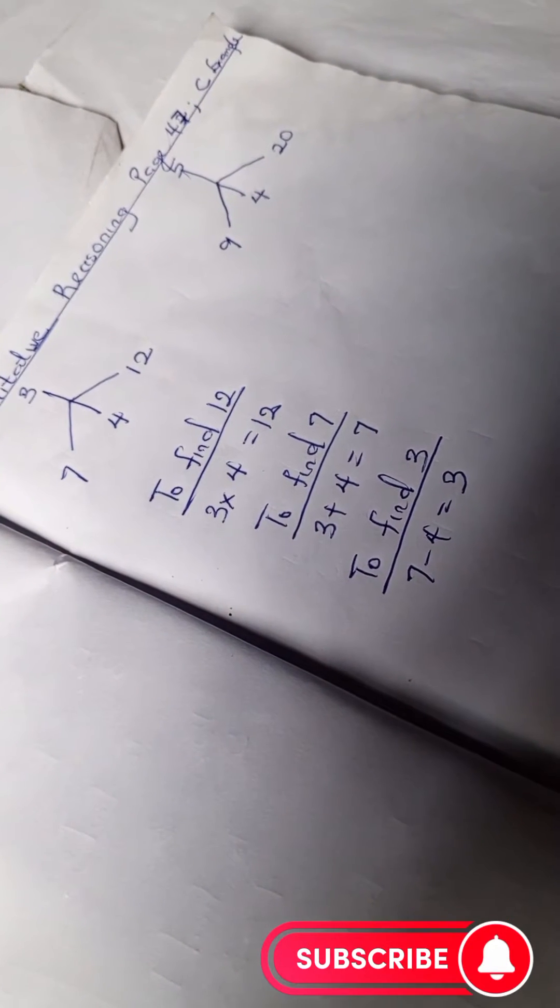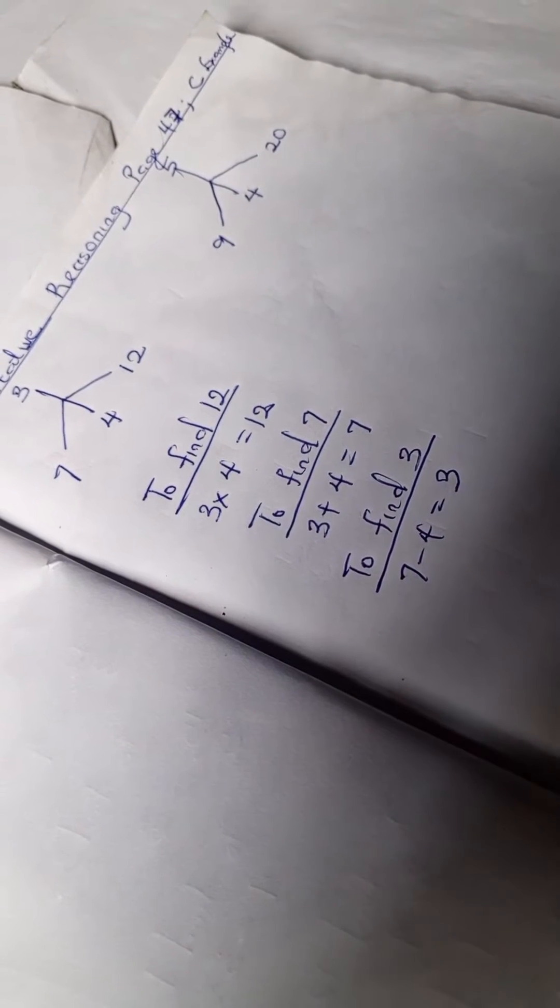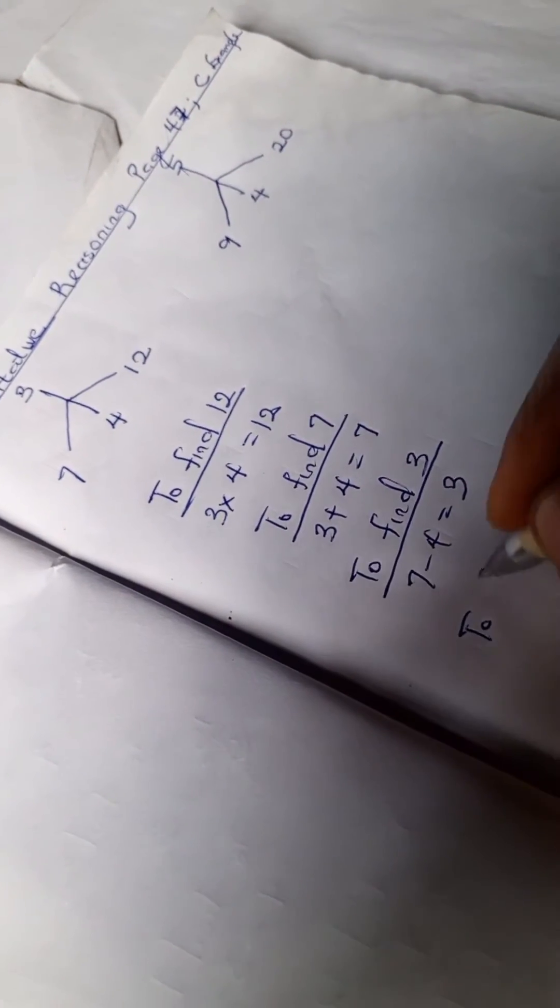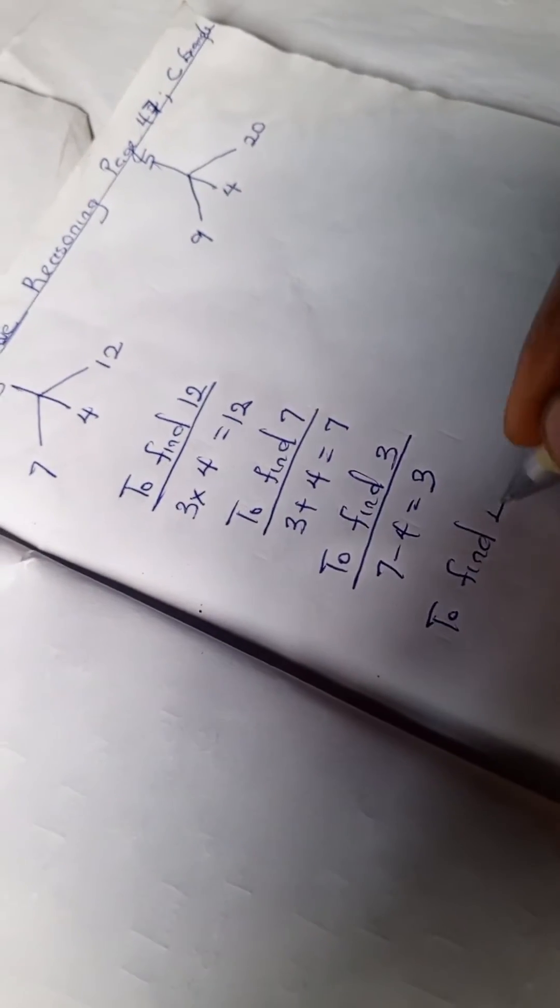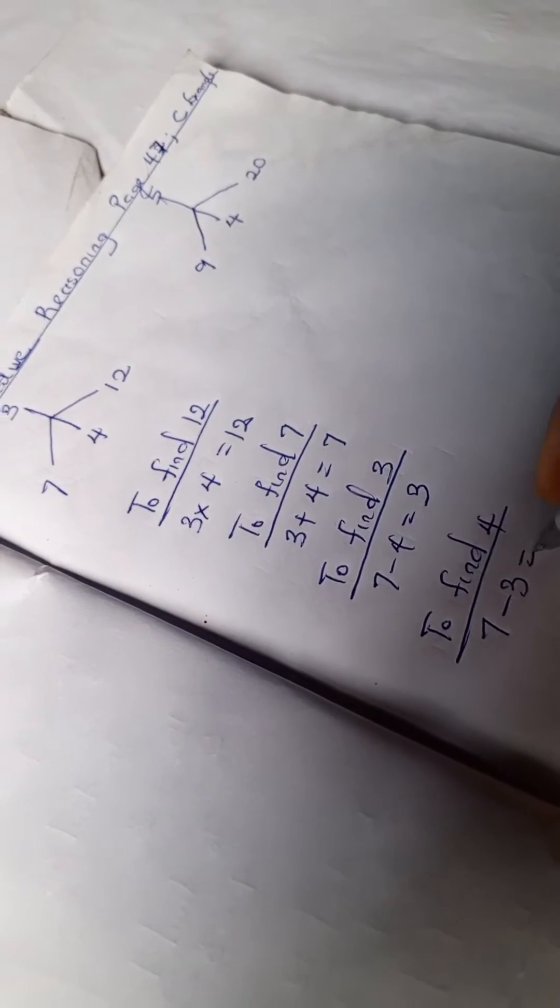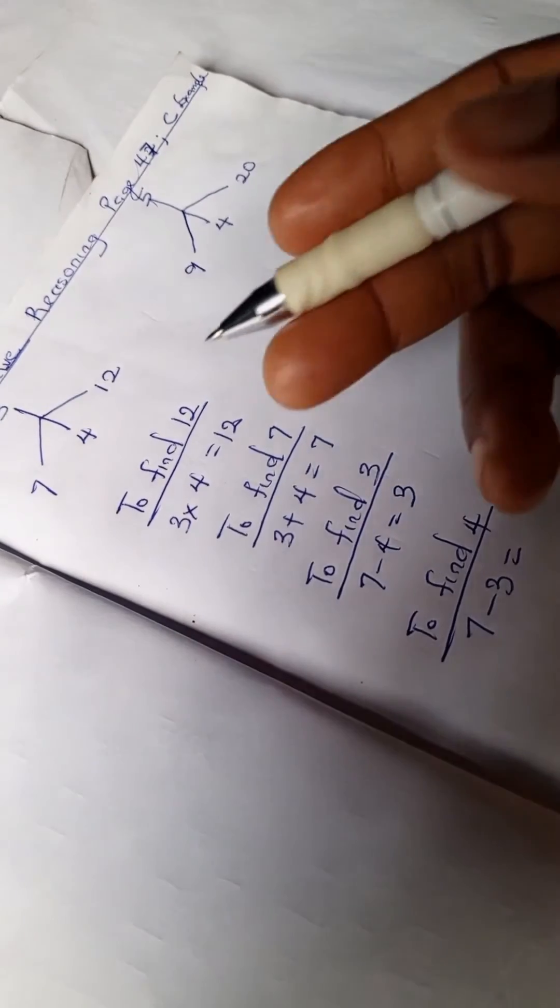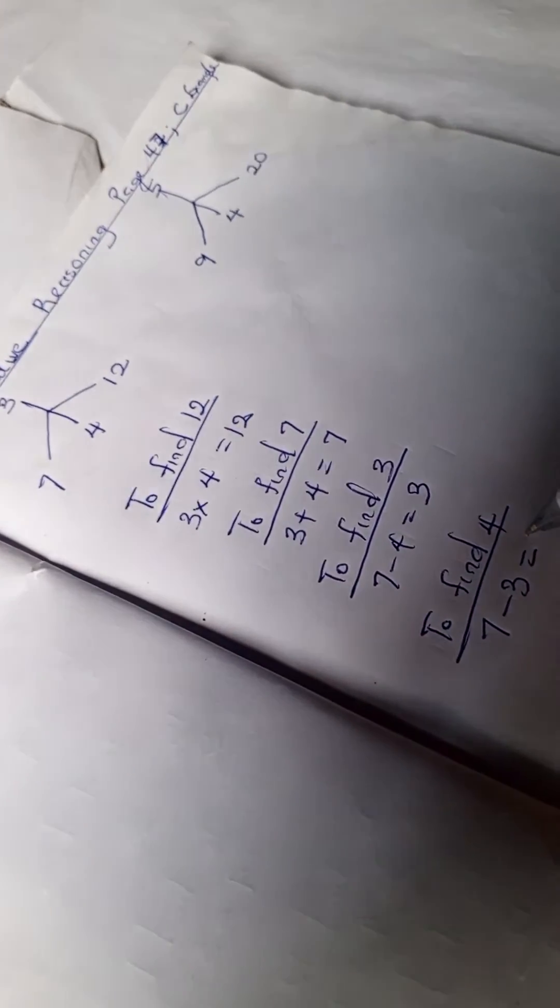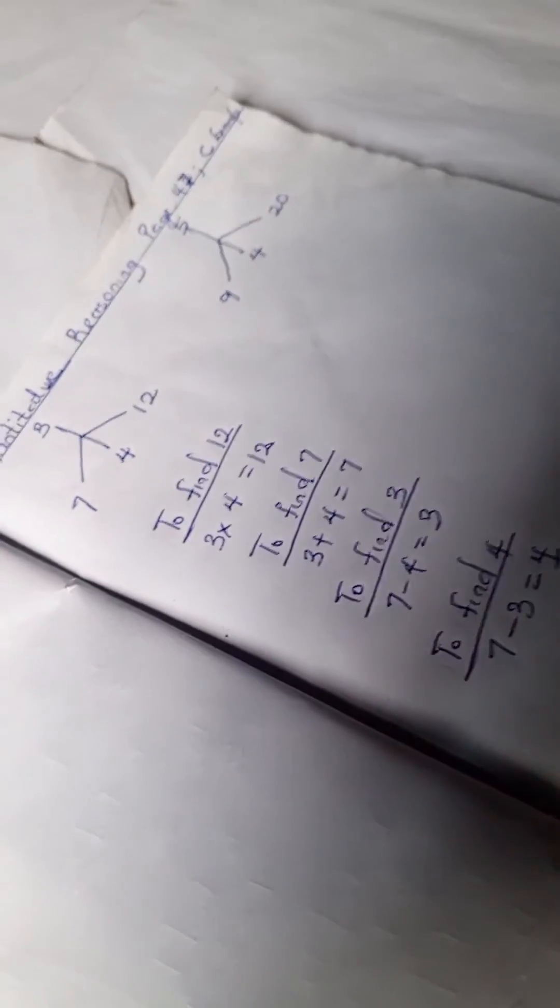To find 4, we have 7 minus 3. You can also do the same with 12, you can use 12 as well.